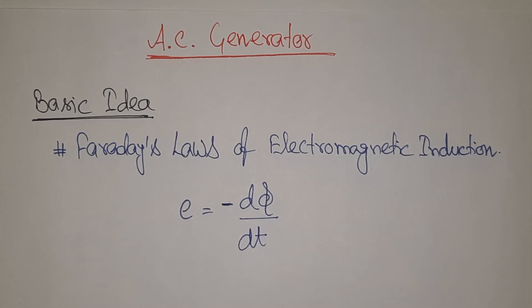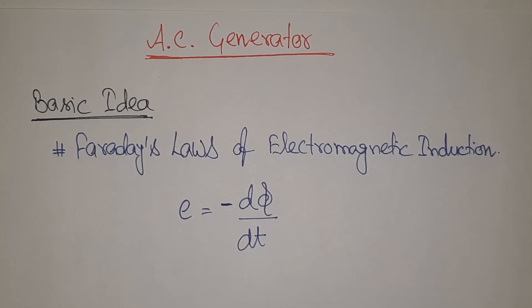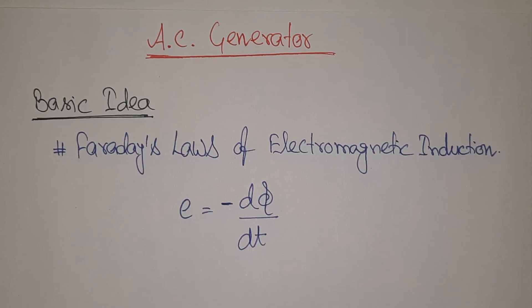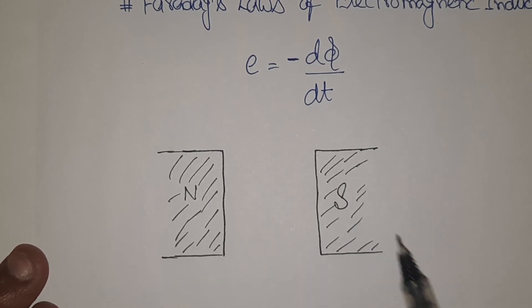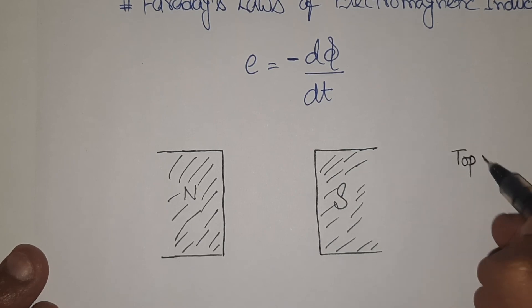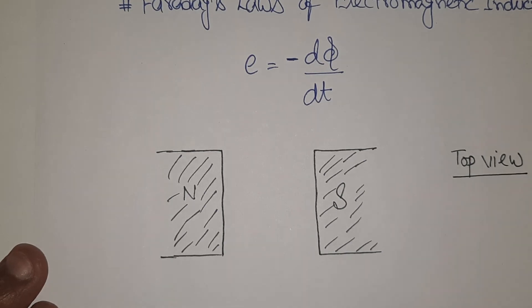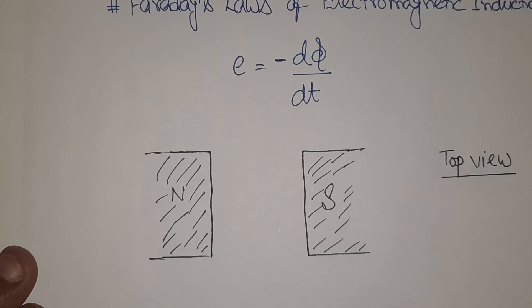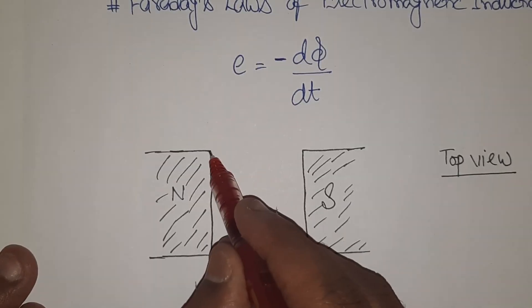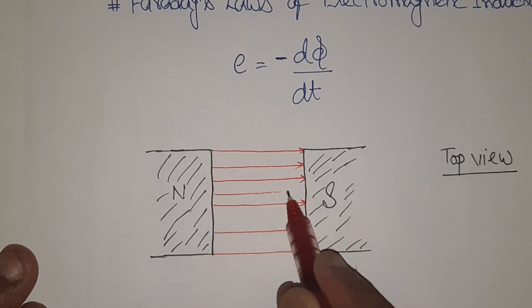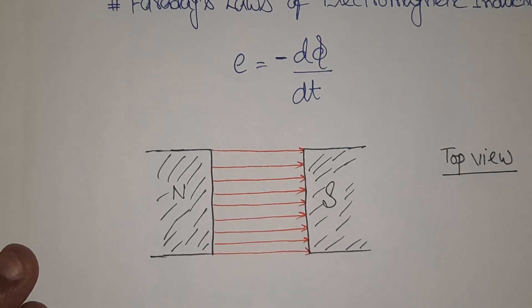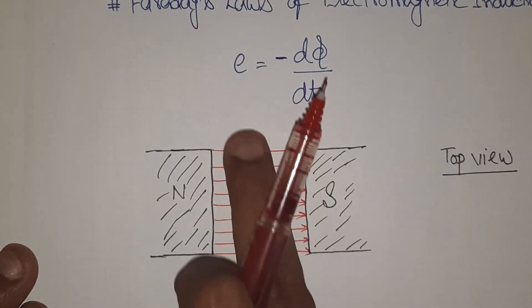In a very simple manner, basically we have the magnetic field. And to have magnetic field, we need to have north and south poles. This is the top view I am showing you. North and south will be producing magnetic field in the direction from north to south where the magnetic field will be existing.